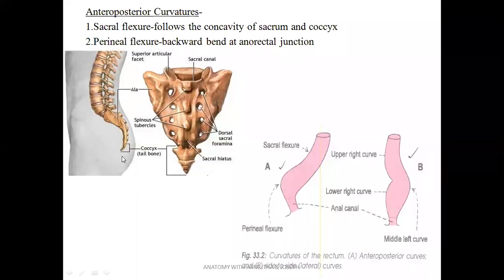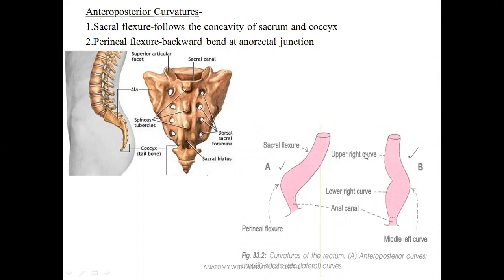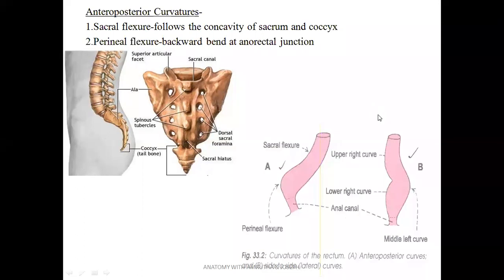Somewhere here is the perineal flexure. We can draw the rectum here — the sacral flexure and the perineal flexure continuing as the anal canal. That is regarding the anteroposterior curvature. You can better understand the lateral curvatures in this diagram. There are curvatures like the upper right curve, middle left curve, and lower right curve. The side curves are towards the side, which is why we call them lateral curvatures.